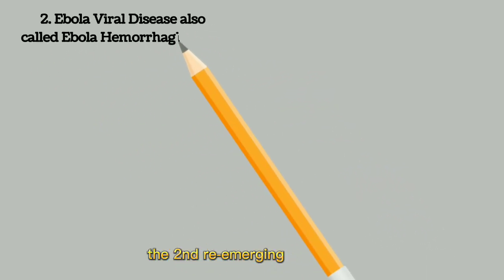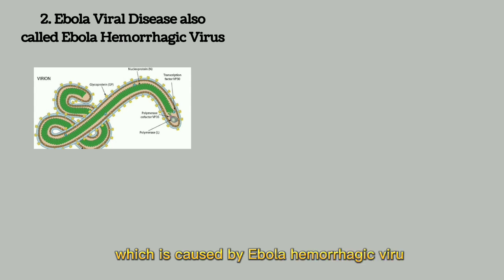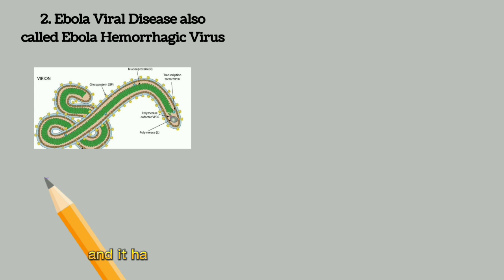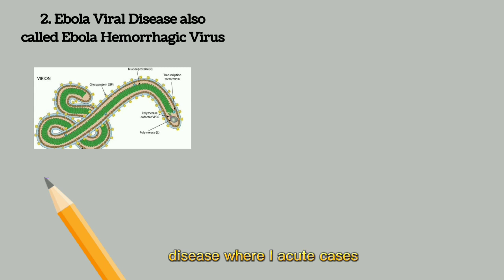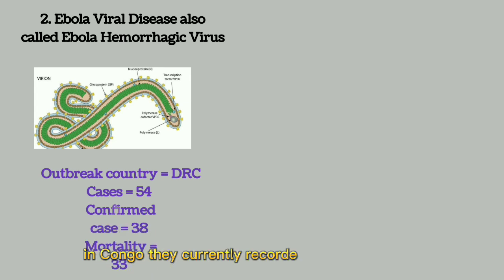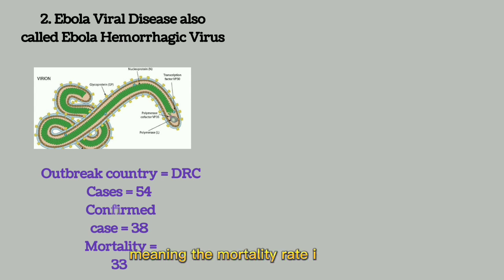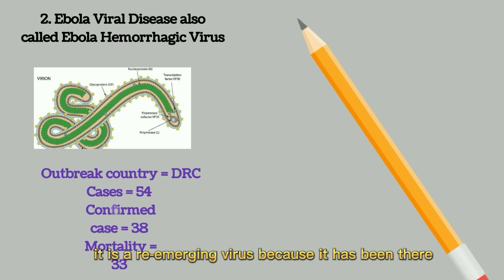The re-emerging virus is Ebola hemorrhagic disease, caused by the Ebola hemorrhagic virus. It is an RNA virus with a helical structure with many capsomers. It causes hemorrhagic disease where, in acute cases, blood flows throughout the body — from the eyes to the pores of the skin — and eventually leads to death. In Congo, they have currently recorded 38 confirmed cases, out of which 33 were dead. This shows that in every 40 people, around 32 can die, meaning the mortality rate is around 70 percent. It is a re-emerging virus — it has been there before and is just re-emerging now.